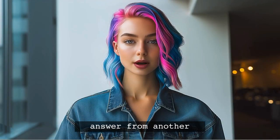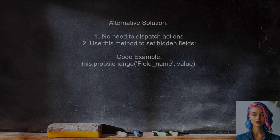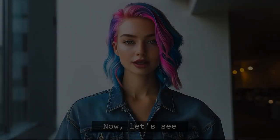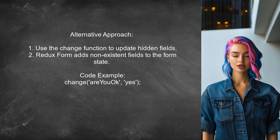Let's dive into a different answer from another user. An alternative approach shared by a user is quite straightforward. They suggest that you don't need to dispatch any action to set a hidden field in Redux form. Instead, you can simply use the change method directly. Another approach suggests you don't need to create a hidden field at all — you can use the change function to update the value of a field even if it doesn't exist yet. Redux form will automatically add it to the form state.